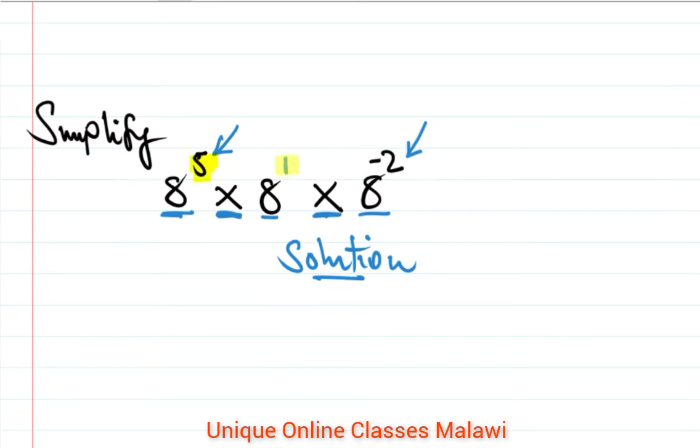Since we have the same base throughout, we're gonna write 8 to the power 5, then plus 1, then plus negative 2.